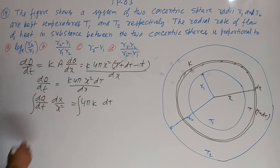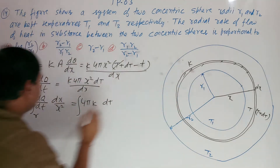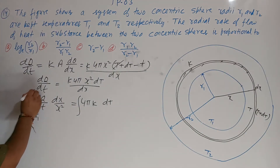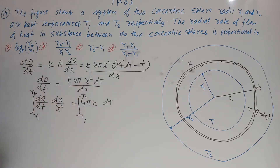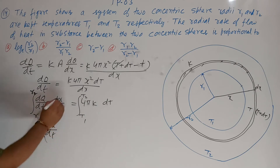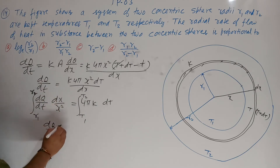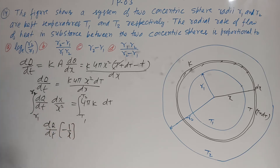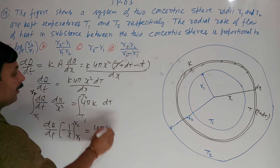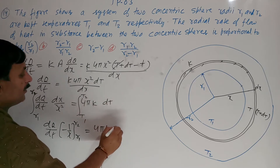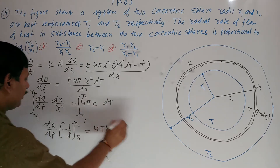Integrating: X goes from R1 to R2, and temperature varies from T1 to T2. The integration of 1/X² is −1/X, evaluated from R1 to R2. On the right side, 4πK times the integration of 1 gives T, evaluated from T1 to T2.